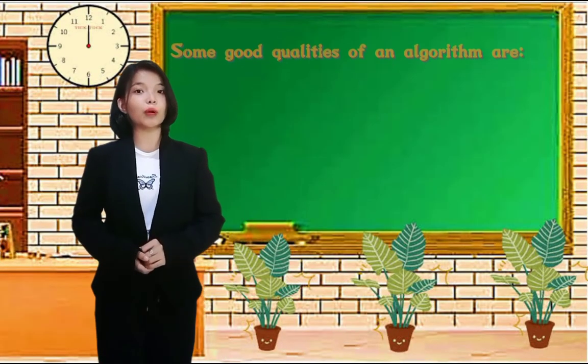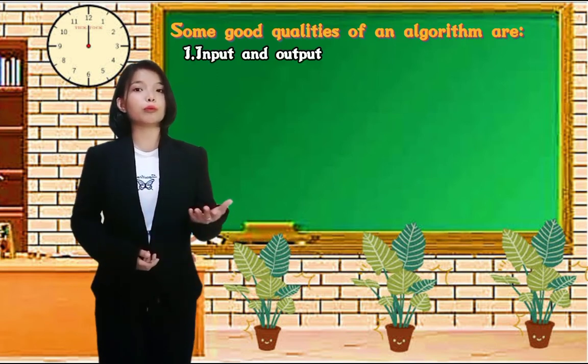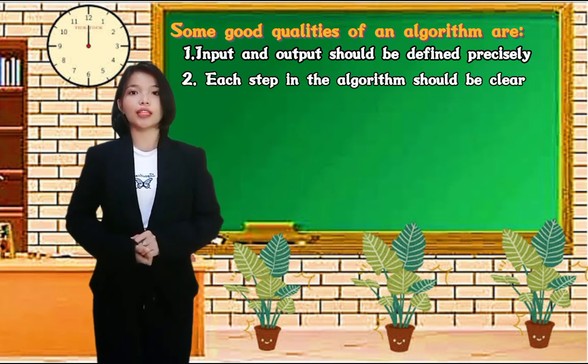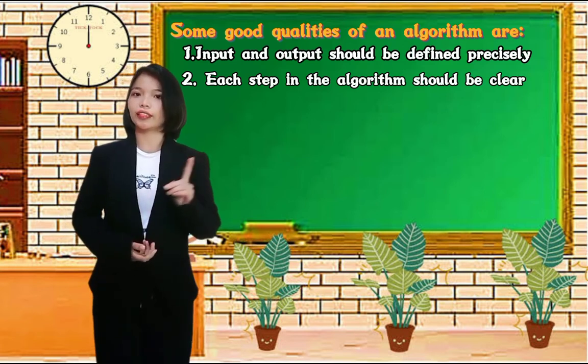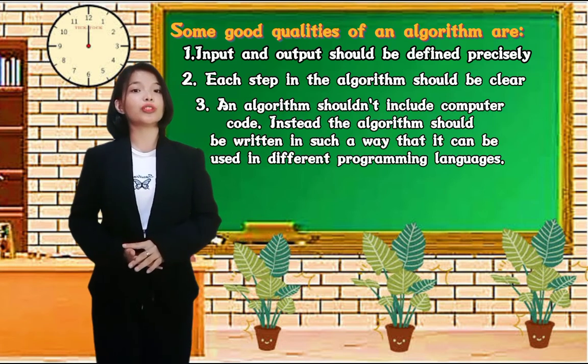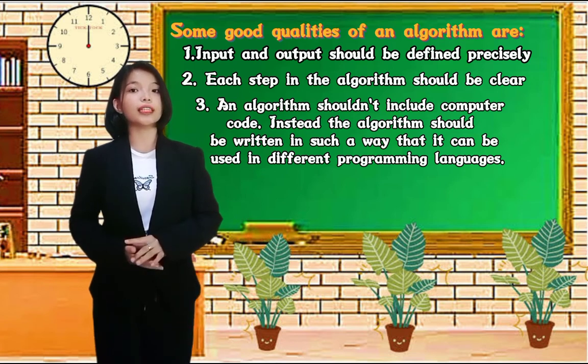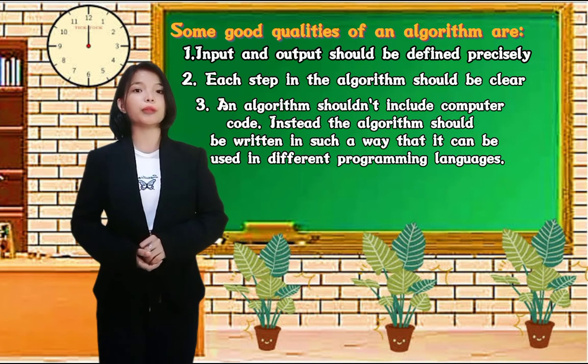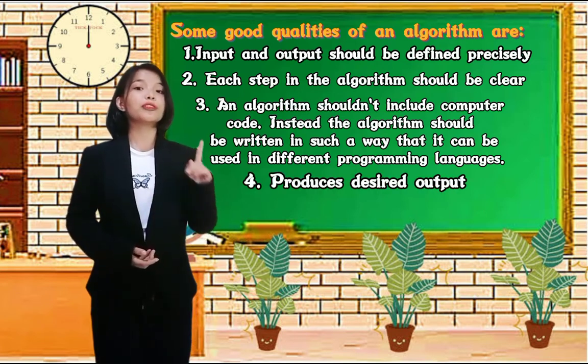Some good qualities of an algorithm are: Input and output should be defined precisely. Each step in the algorithm should be clear. An algorithm shouldn't include computer code. Instead, the algorithm should be written in such a way that it can be used in different programming languages.